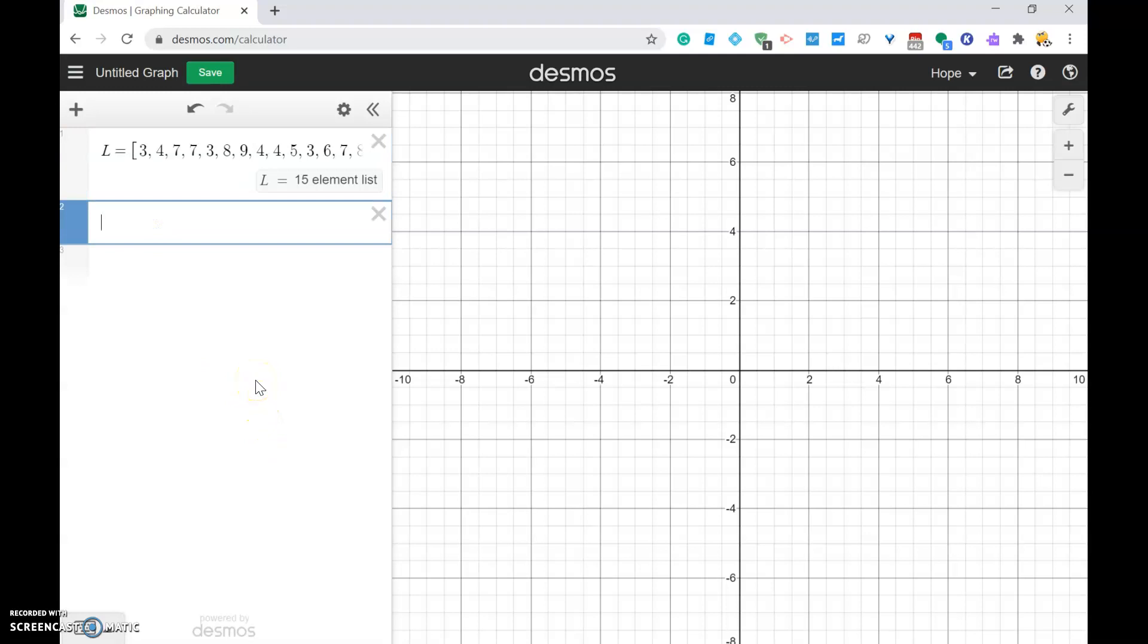Now you're going to type dotplot in all lowercase, and this is really important. It needs to be all lowercase with no spaces. You're going to go right to a parentheses and it should come up with data set bin width, and you're going to put L because that's the list I just created.